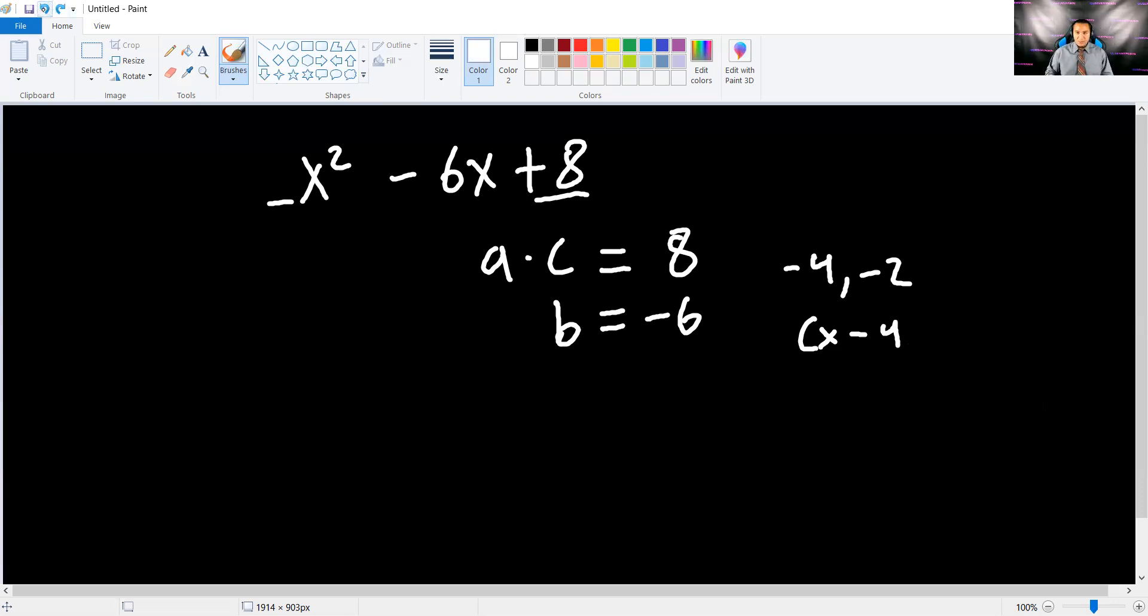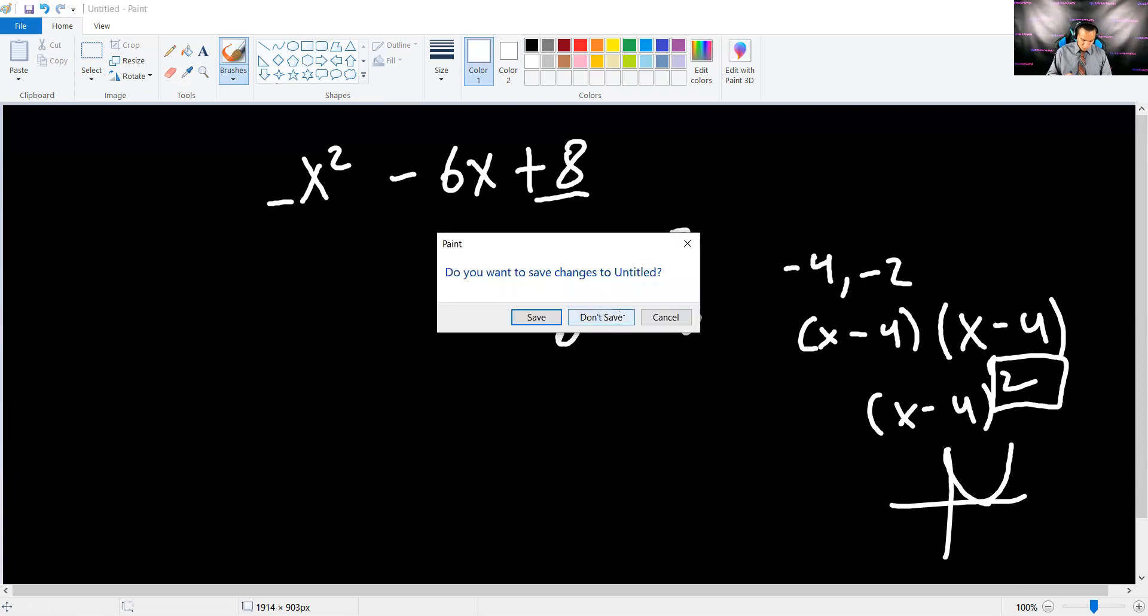You have to complete the square when you don't get two of the same. If it had been negative 4 and negative 4, then I get x times x minus 4 and x minus 4. And when I multiply them, I get x minus 4 squared. And I don't have to complete the square there because it already is squared. And graphing this is simple.